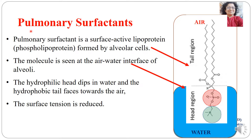Let us begin with pulmonary surfactants, which are also known as lung surfactants. Pulmonary surfactant is a surface-active lipoprotein, which is chiefly a phospholipid formed by the alveolar cells. The molecule which makes the lung surfactant is seen at the air-water interface of the alveoli. The hydrophilic head of this lung surfactant molecule dips into the water, and the hydrophobic tail faces towards the air.